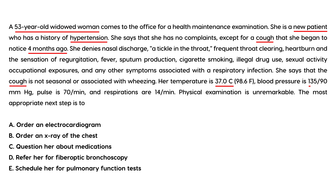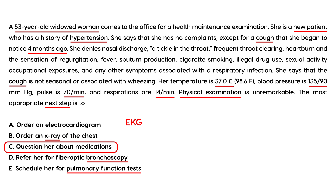Temperature is normal. Blood pressure is 135/90. Pulse is 70. Respirations are 14. Physical exam is unremarkable. The most appropriate next step: she basically has a cough and has denied every other possible etiology. Among an EKG, x-ray, bronchoscopy, or pulmonary function test, the simplest and most appropriate thing is to ask her about her medications, because she could be on an ACE inhibitor — and she does have a history of hypertension. That's what's causing the cough.